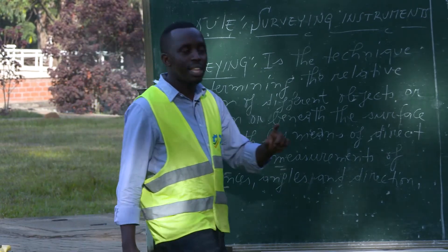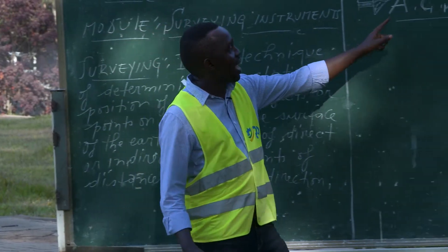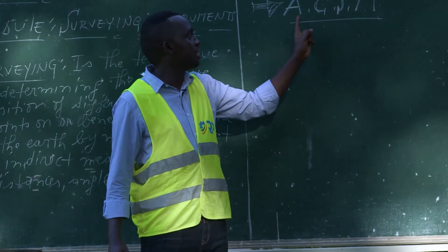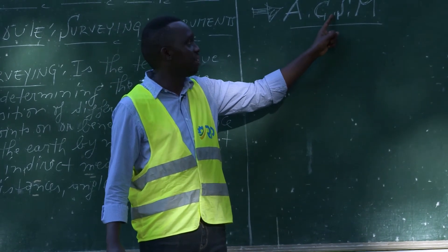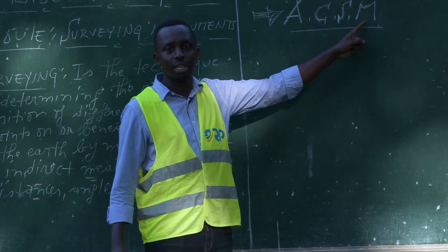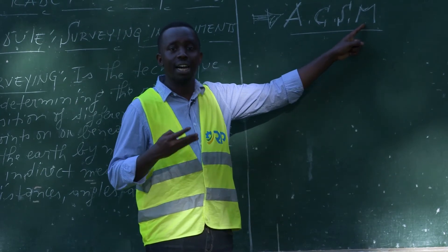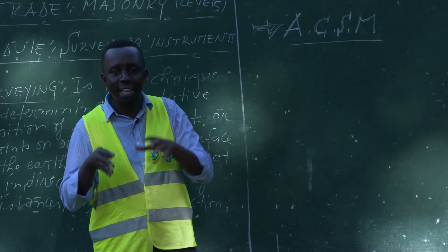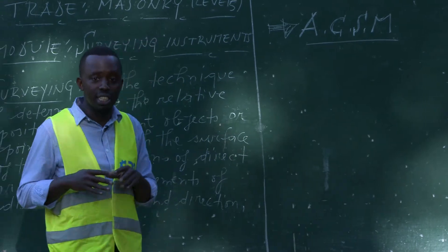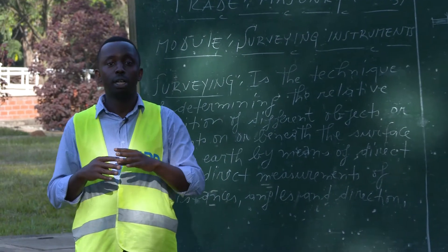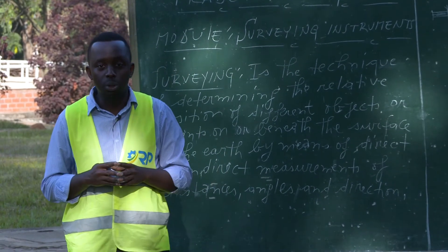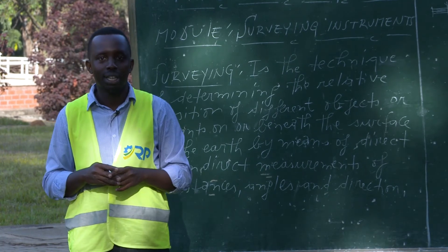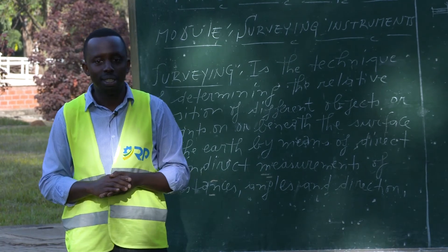According to ACSM, which is the American Congress on Surveying and Mapping, surveying is defined as an art and science of making all essential measurements in order to determine the relative position of different points on the surface of the earth.